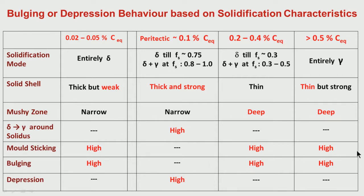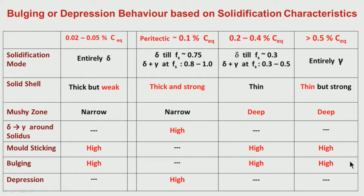For very low carbon and very high carbon — except for the peritectic chemistry range of around 0.07 to 0.17 percent carbon — this particular chemistry range has a depression tendency. For lower carbon and higher carbon ranges compared to that, we have sticking and bulging tendency.